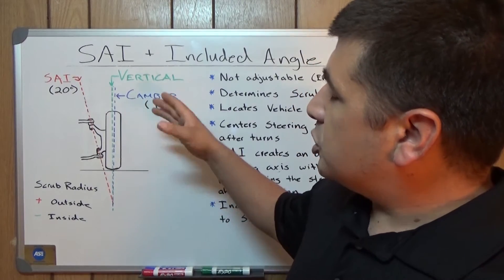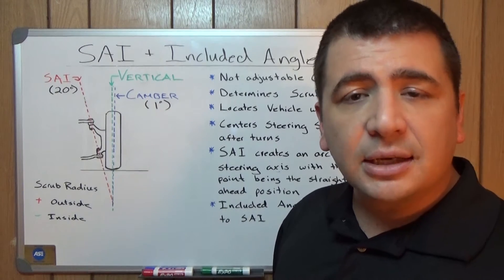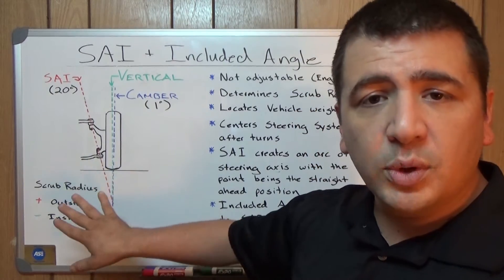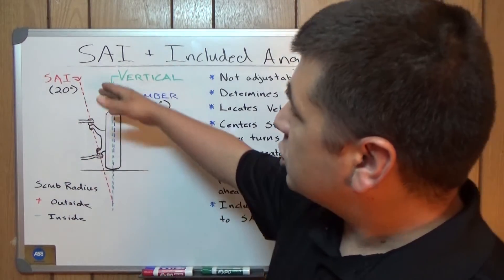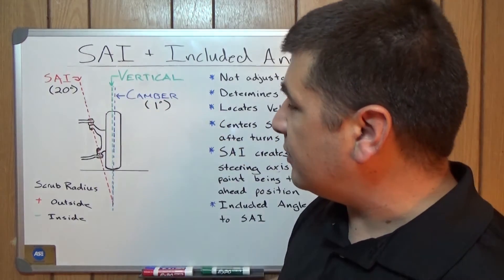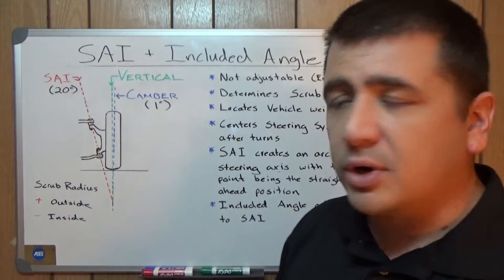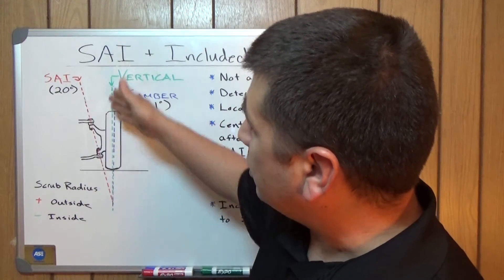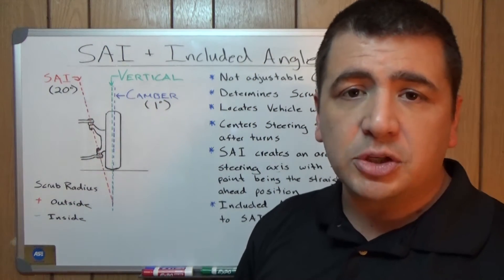Just like caster was a tilt of the steering axis, steering axis inclination is the same thing. The only difference is in this case we're viewing the suspension from the front, from the straight ahead. Drawing a line through the upper and the lower steering pivot — in this case we used an upper and lower ball joint to illustrate it — we draw this line and compare it to a vertical. The difference between the two is your steering axis inclination angle measurement.